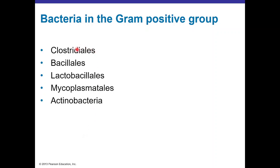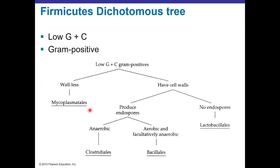The dichotomous tree for low GC content Firmicutes: they can be subdivided into those without a wall, like Mycoplasmatales, or those with a wall. Those with a wall can produce endospores or not. If they don't produce endospores, they will be Lactobacillus. If they do produce endospores, they can be anaerobic like Clostridiales, or aerobic and facultative anaerobic like Bacillus.